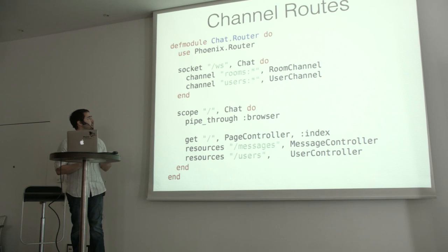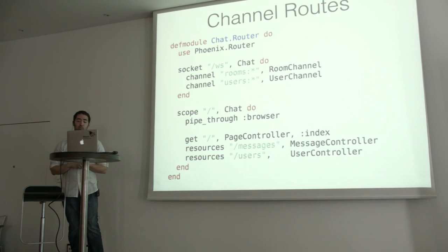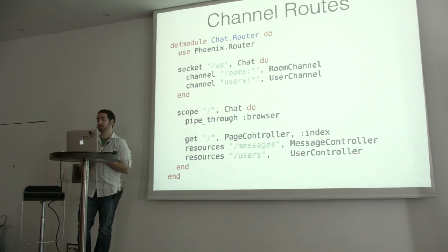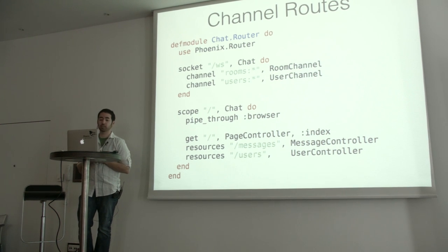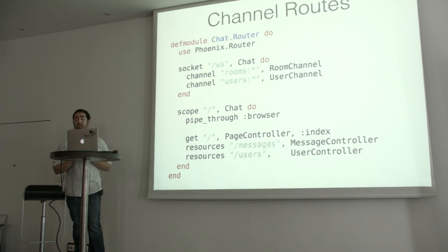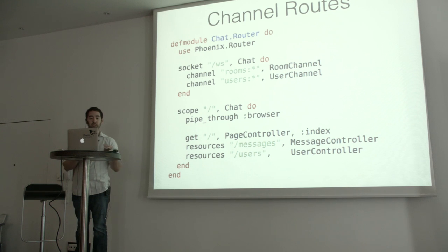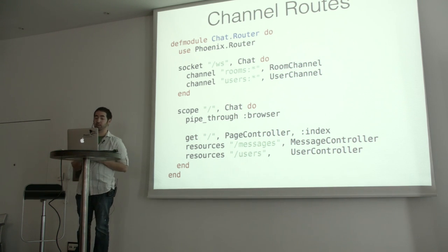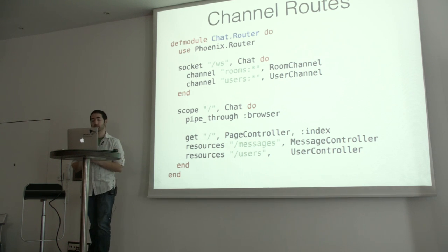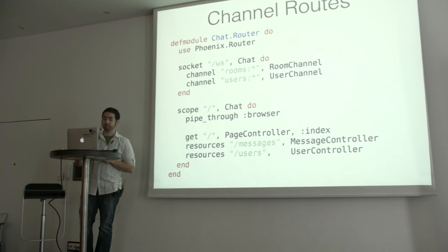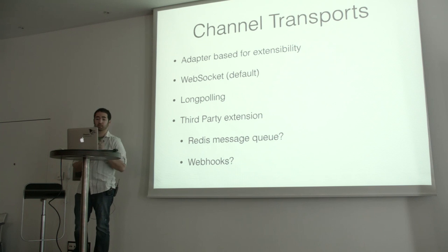We have channel routes, which you've probably seen. Your router routes things other than just traditional web requests — we support HTTP channel transports by default, but if you had a Redis message transport it would still be processed through the router. The idea is the router routes traffic in your application regardless of where it's coming from — from an HTTP request path to messages coming into your app going to a controller or a channel.